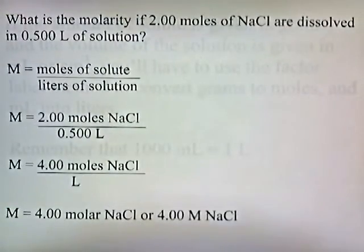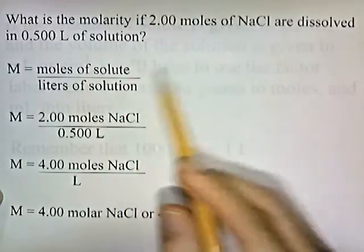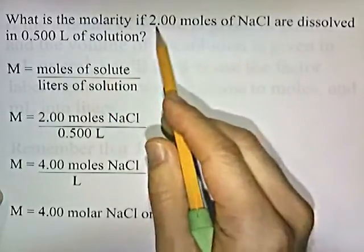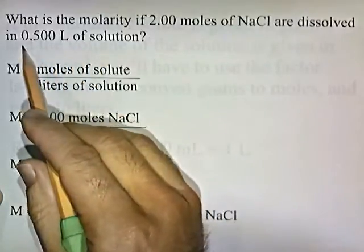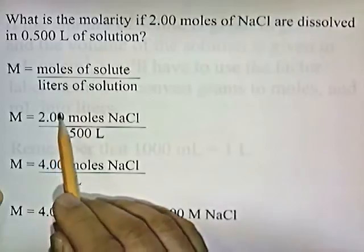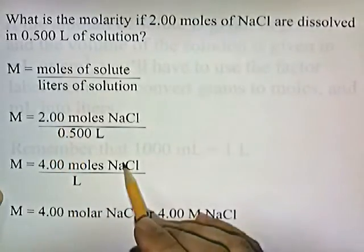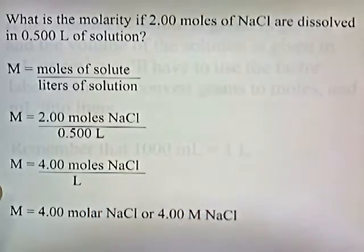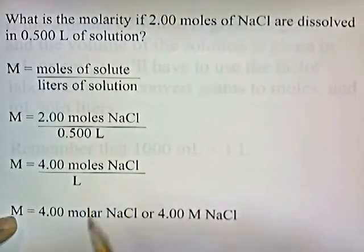What is the molarity if two moles of NaCl are dissolved in 0.5 liters of solution? Molarity is moles of solute divided by the volume of the solution in liters. The moles of solute is two moles of NaCl, and the volume of the solution is half a liter. Two divided by 0.5 is four, giving us four moles of NaCl per liter. So if you had a liter of this solution, there would be four moles of NaCl dissolved in it.